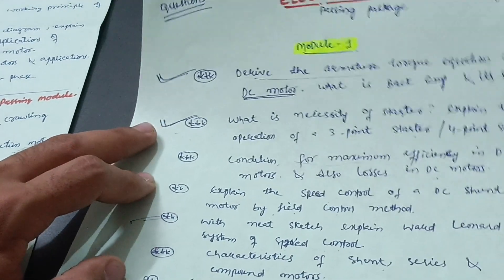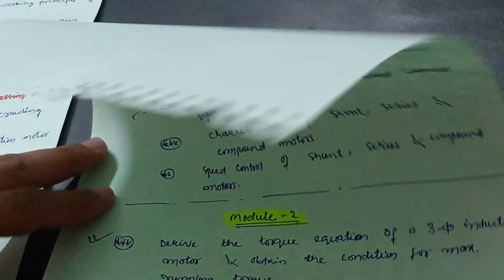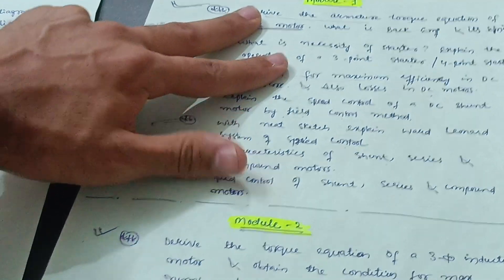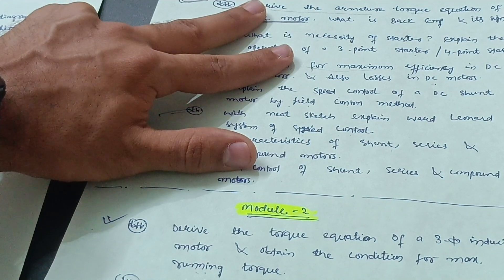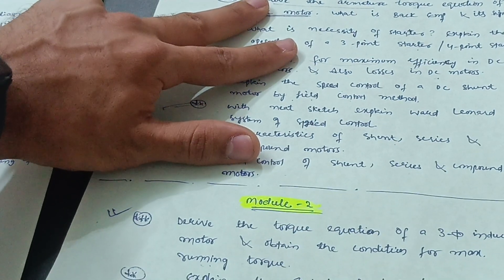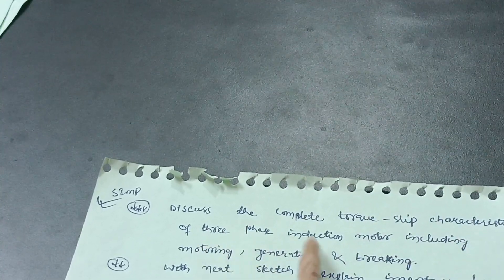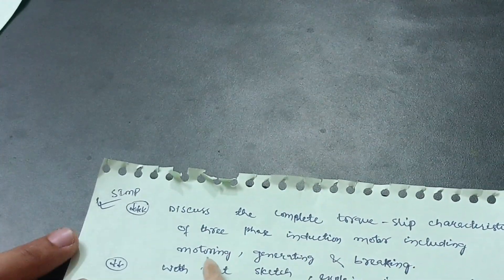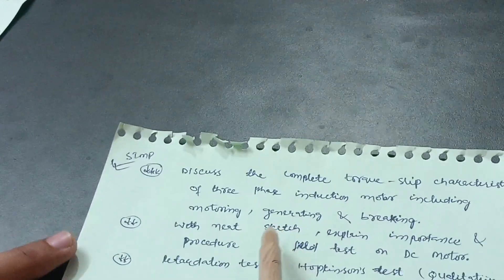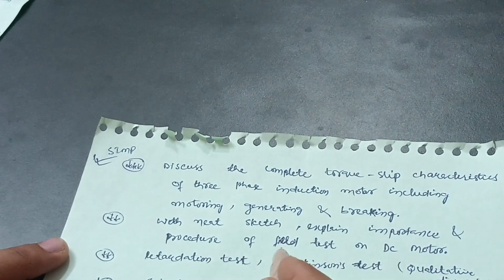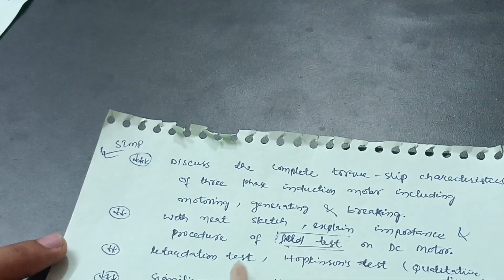For module two, cover: derive the torque equation of a three-phase induction motor and obtain the condition for maximum running torque; explain the Swinburne's test to determine no-load losses of a DC machine and its limitations. The most important question is: discuss the complete torque-slip characteristics of a three-phase induction motor including motoring, generating and braking. Also, with a neat sketch, explain the importance and procedure of the field test on a DC motor — this is always asked in VTU examinations.